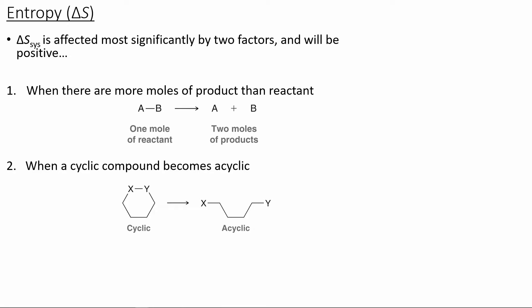With regards to organic chemistry and our reactions, there are a few types of changes that entropy will directly relate to. Specifically, looking at a reaction that involves breaking a bond: if we have one mole of reactants A–B and we break that bond to form A and B, we're going to have two moles of products. So this would be an example of increasing the disorder. Another example is if we have a cyclic compound that becomes acyclic.